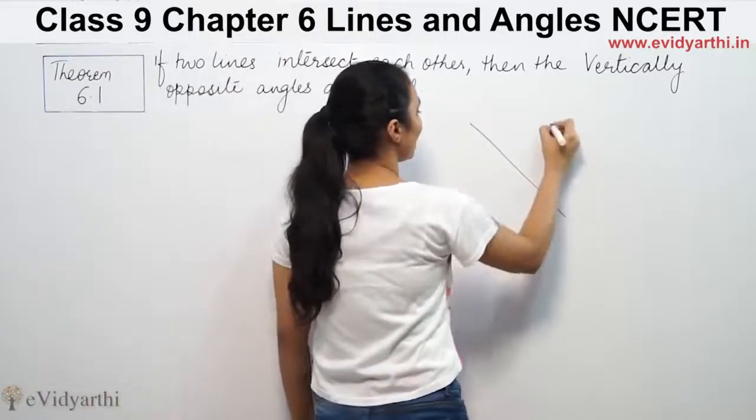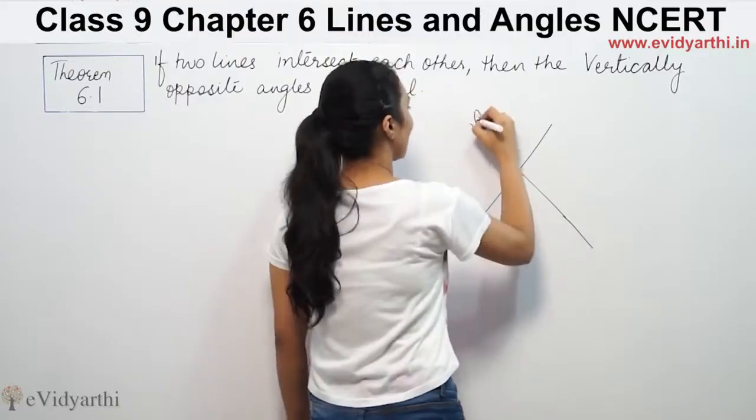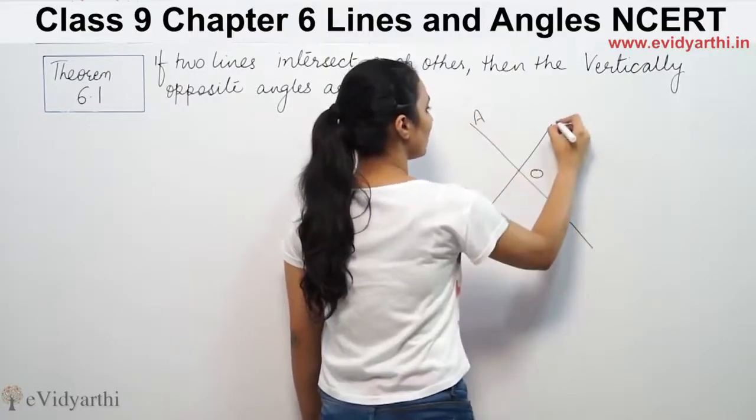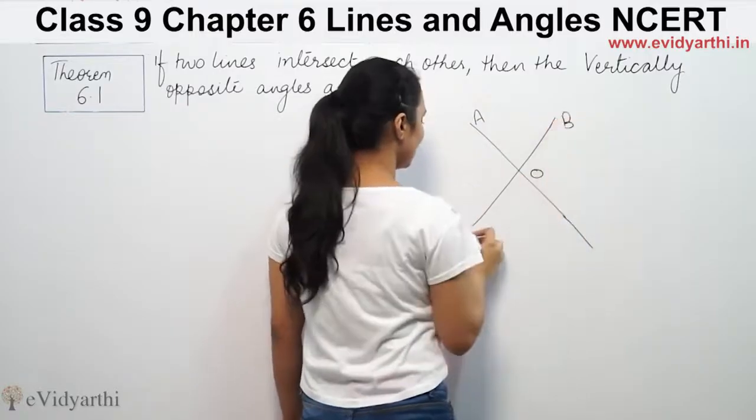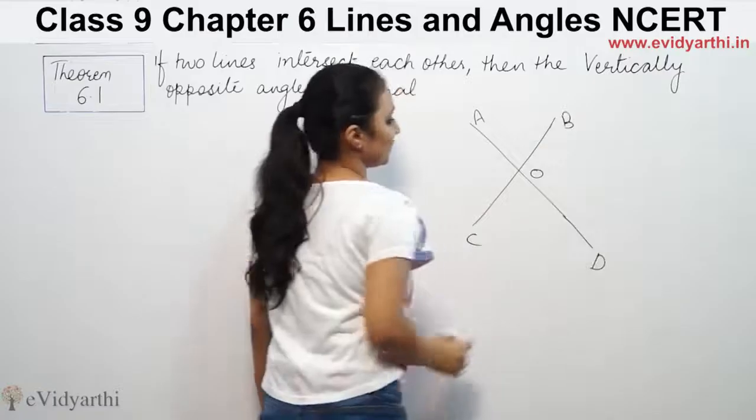We have two lines here. One is this. This is A, this is O, this is B, C, D. These are two lines.